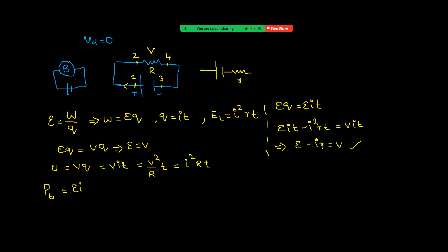When r = 0, it is an ideal battery, so EMF equals potential difference across its terminals. Also, when I = 0 (open circuit), EMF equals potential difference across terminals. So EMF also equals the terminal potential difference in open circuit.